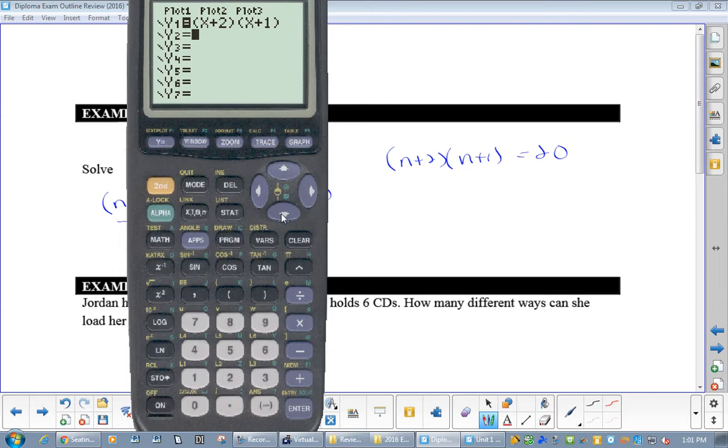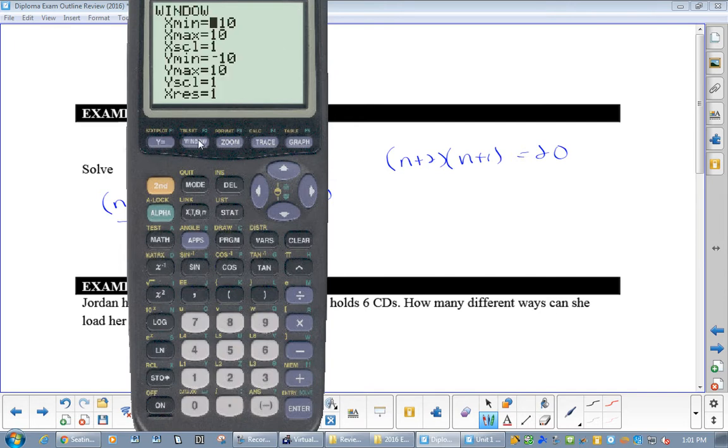And in Y2, let's put 20. Now, if you hit zoom six, zoom six only does, like go to your windows. It only goes up to 10. Right. So, if your Y2 is 20, you better make your Y max, like 30. Now, you're going to get two answers. One is going to be a negative answer. And the other one will be positive.